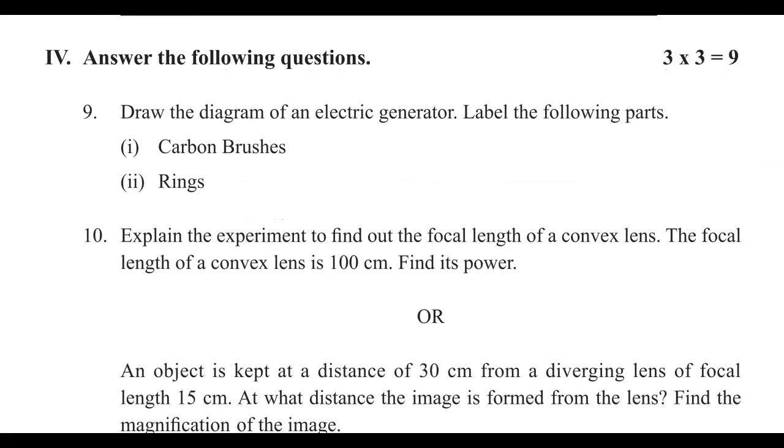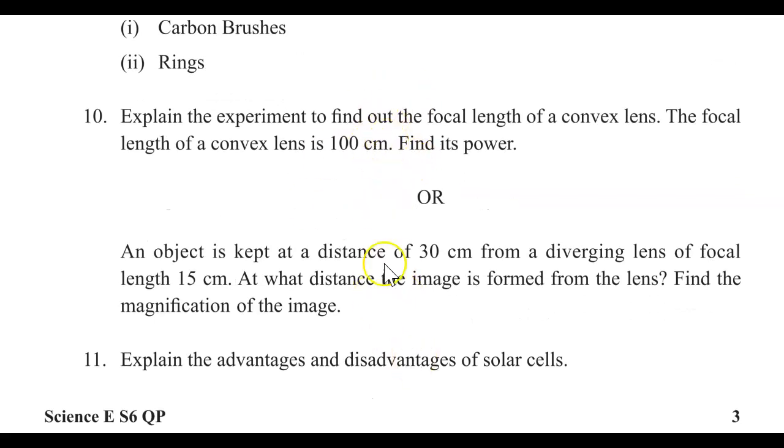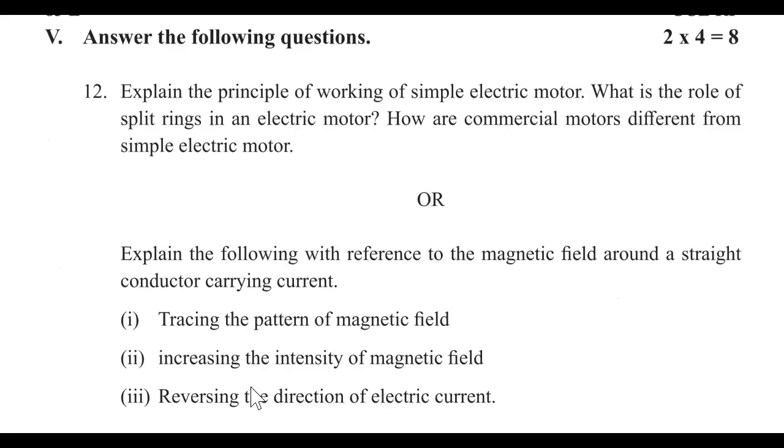Fourth main, each question carries three marks. Totally we have three questions, nine marks. There is a diagram. And there is a choice question here, out of these two, you have to answer any one. And next explain the advantages and disadvantages of solar cells. And fifth main, answer the following questions.